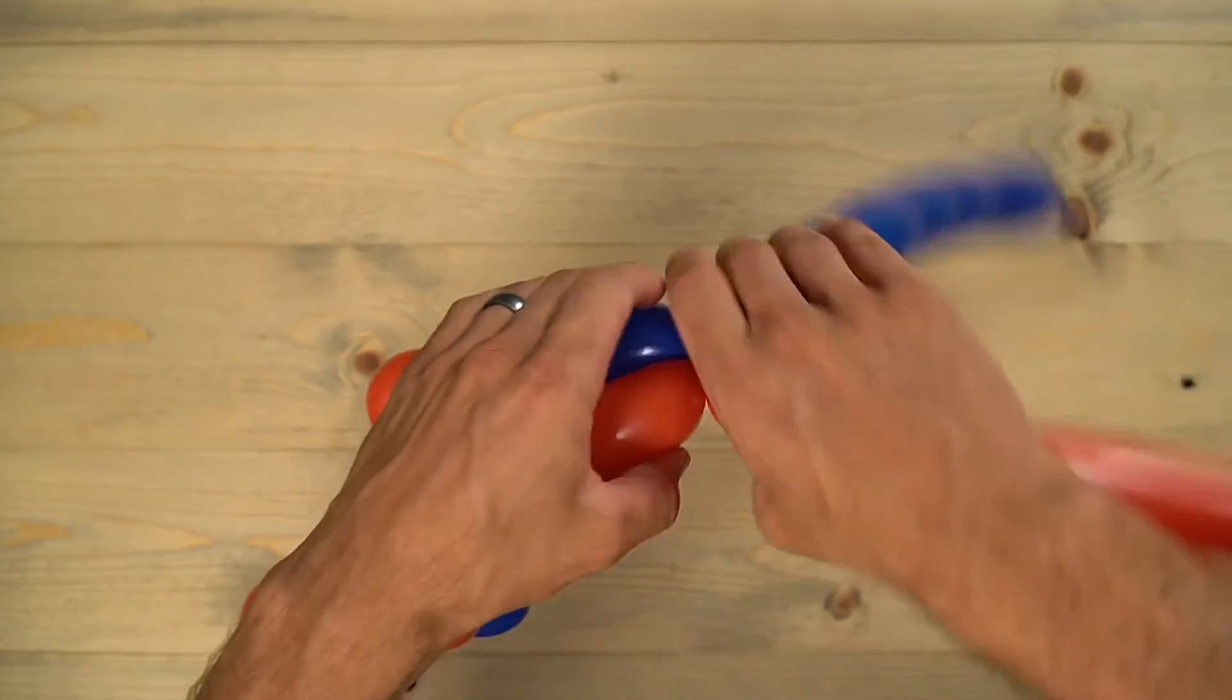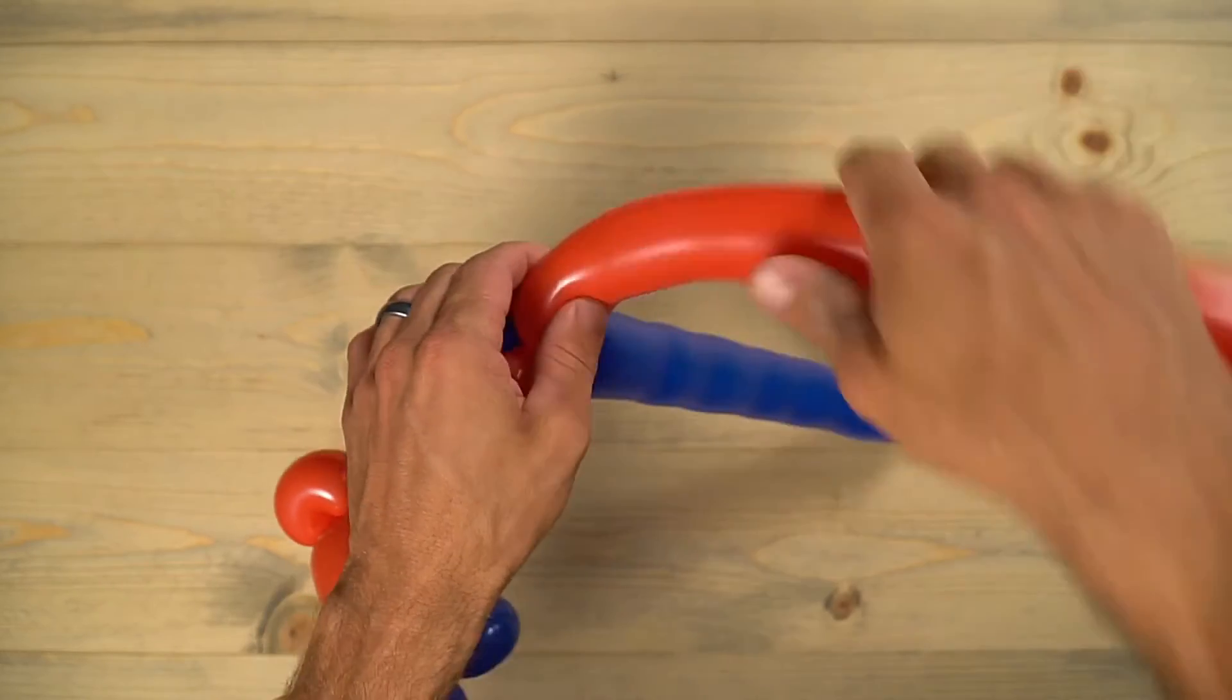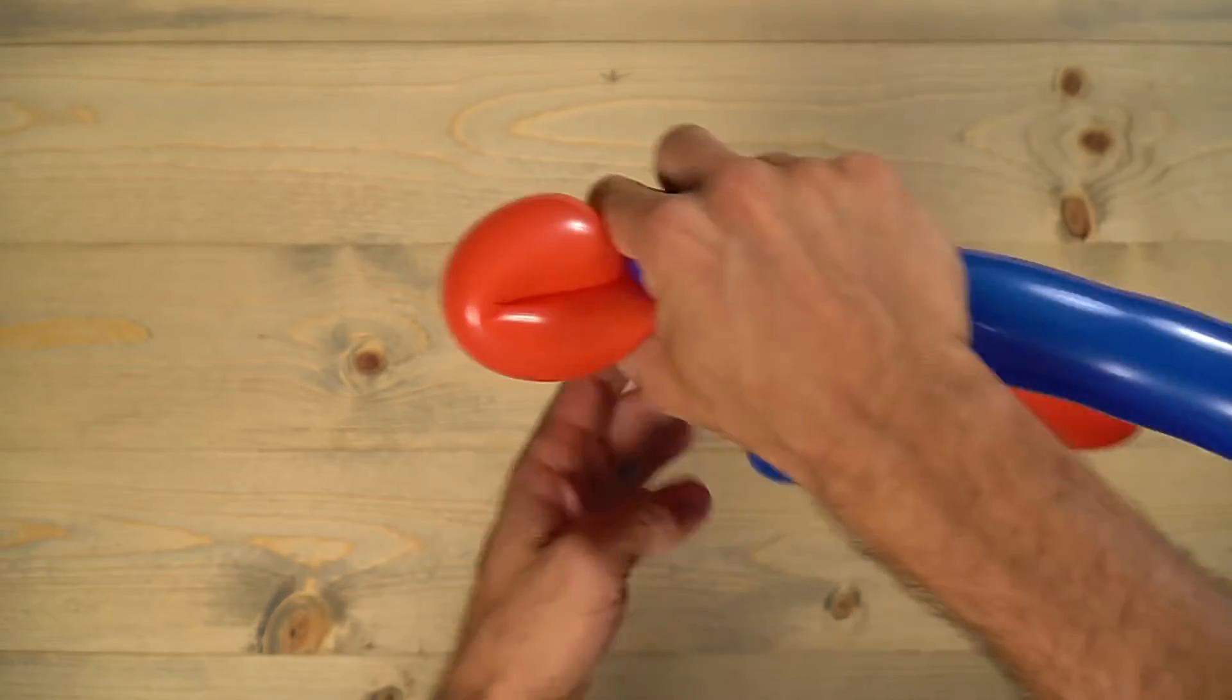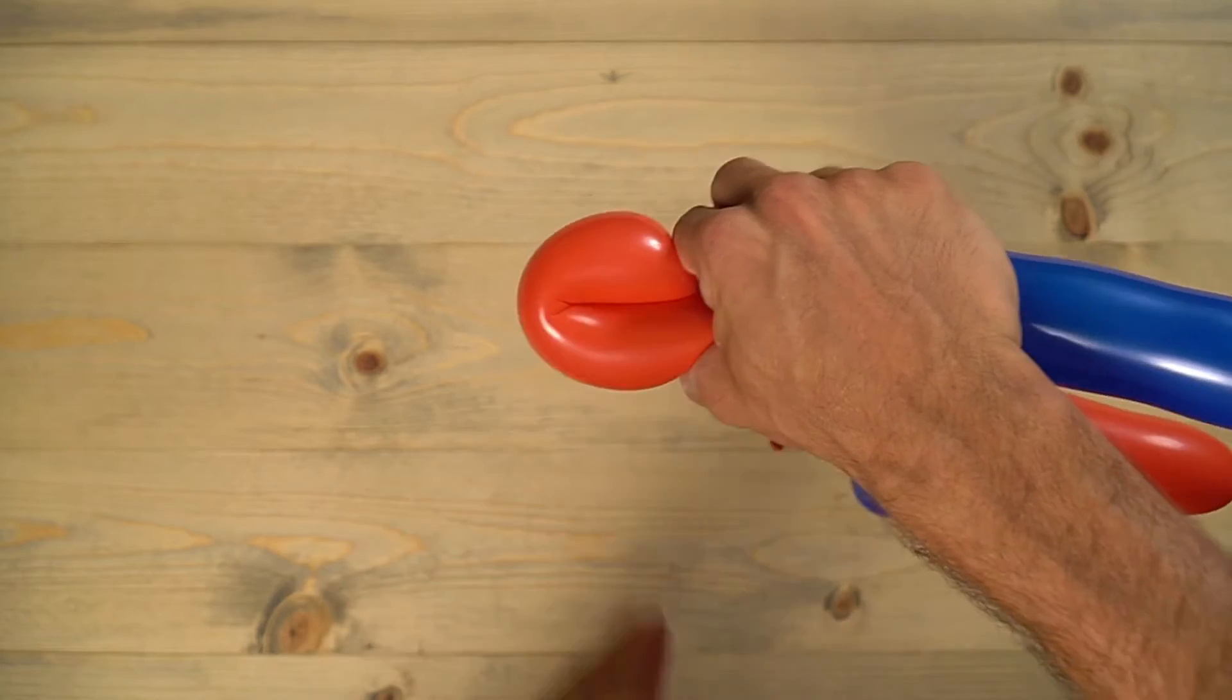This next part you want to use the red, and this will be for the head. So make a loop twist right there. Don't want to make it too big, otherwise it looks kind of funny. So twist that in.